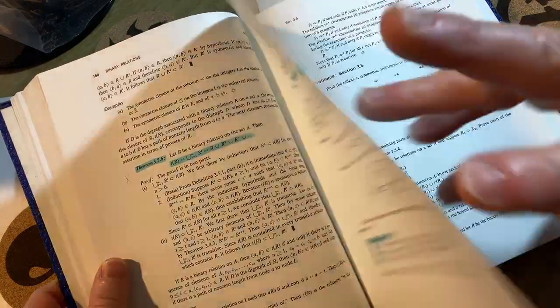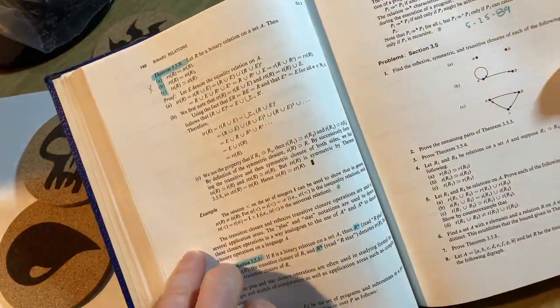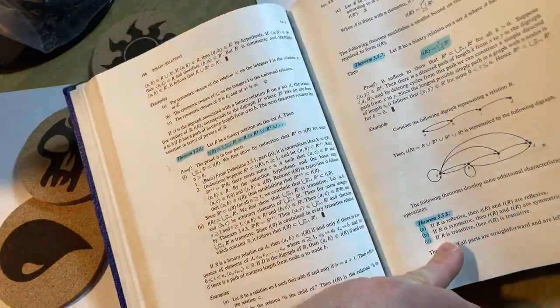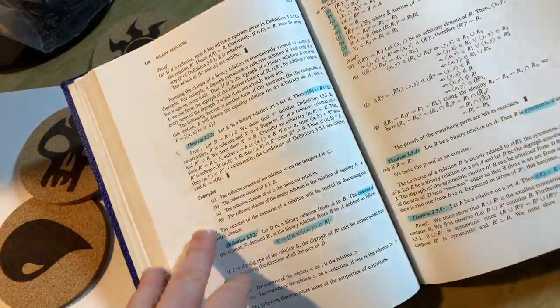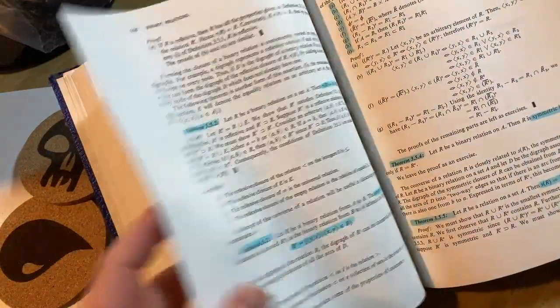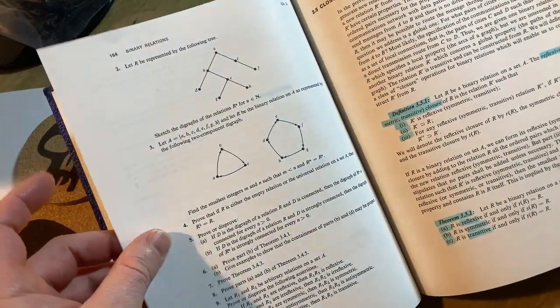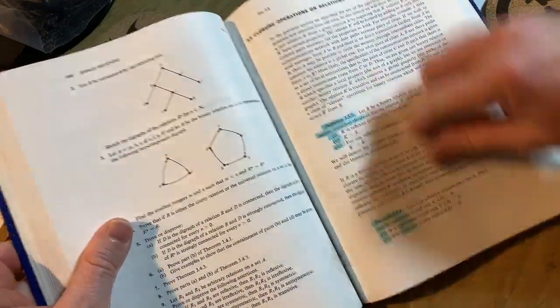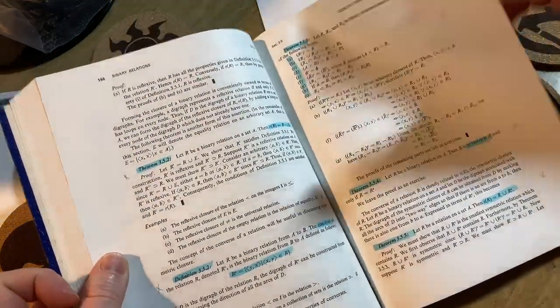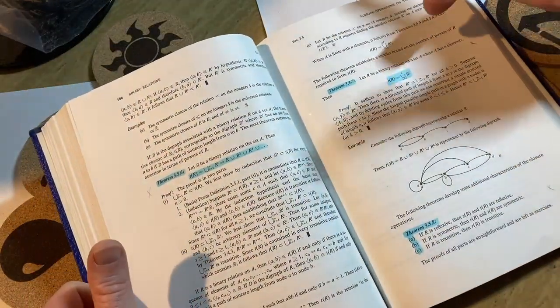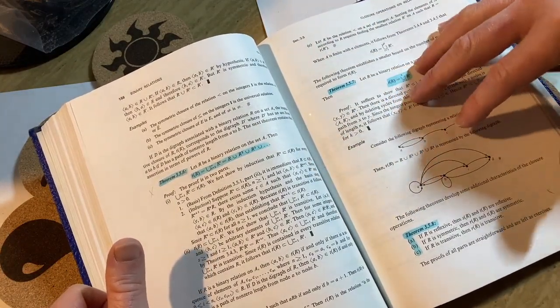Equivalence relation. I don't see the word equivalence relation, but here it says reflexive, symmetric, and transitive relations. So basically, if a relation is symmetric, reflexive, and transitive, it's an equivalence relation. Here it talks about those things: reflexive, symmetric, and transitive. Notice there's highlighting here. That's because the person who had this book before me probably used it for a course. And this is something you would cover in the course.